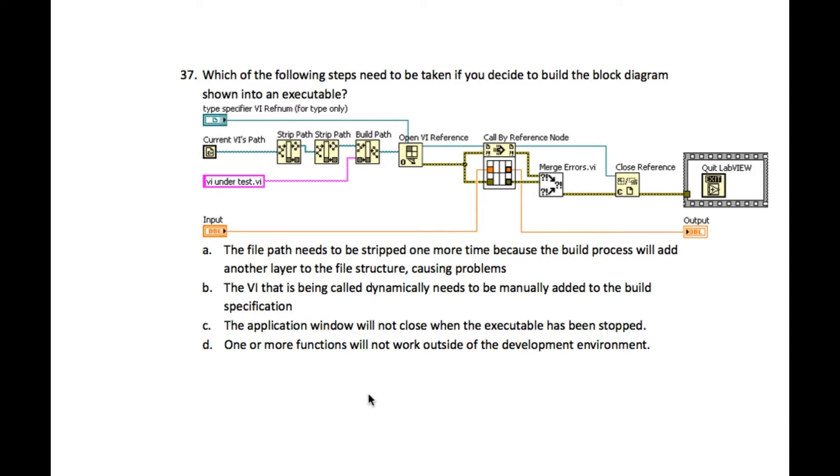If you don't add it manually. So the answer is going to be B: the VI that is being called dynamically needs to be manually added to the build specification.